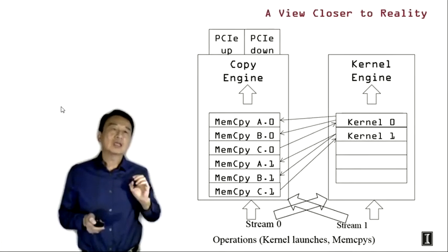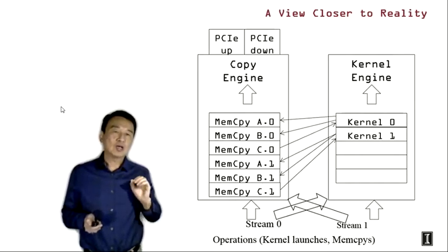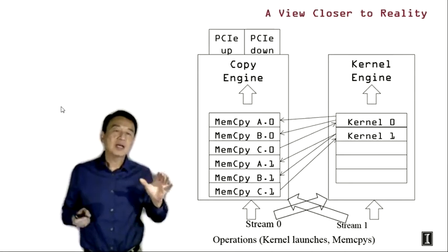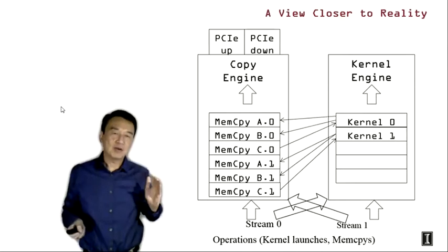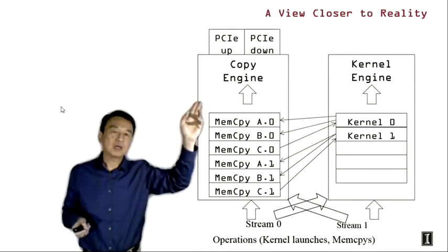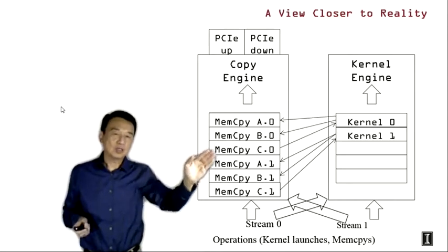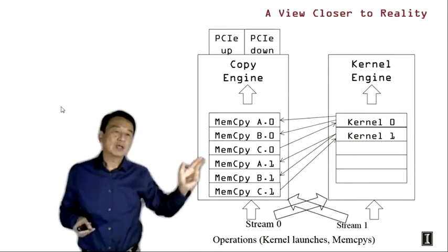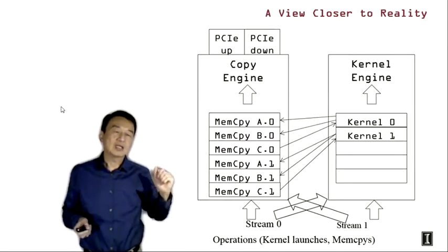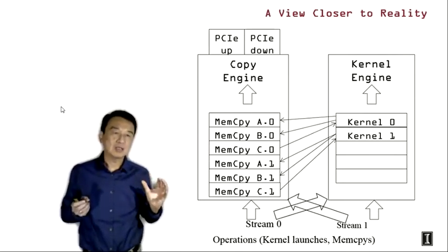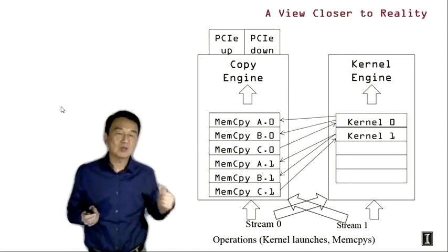In some older GPUs there are actually no conceptual stream queues in the implementation; rather the queues are associated with the copy engine and the kernel engine. The copy engine is the hardware that does PCIe data bus transfer — up meaning from device back to host, or down meaning from host to device. This is really the DMA hardware referred to in 6.1, and there is a real hardware queue associated with it. The kernel engine, with its own queue, consists of all the streaming multiprocessors for executing CUDA kernels.